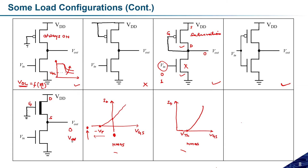Suppose initially Vout = 0, so Vgs = 0, and the depletion transistor is in the on state. If Vin equals one, this lower transistor is on, ground is transferred here, the potential becomes zero, Vgs of the depletion load becomes zero and it is also in the on state. So both transistors are on and it acts as a voltage divider circuit.